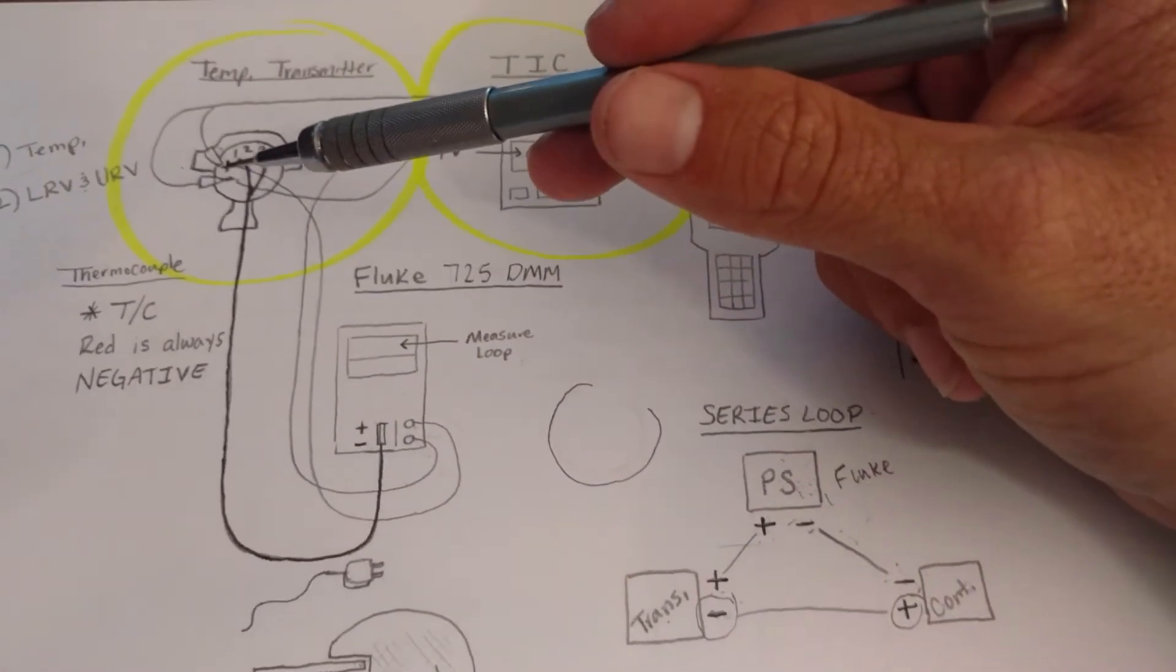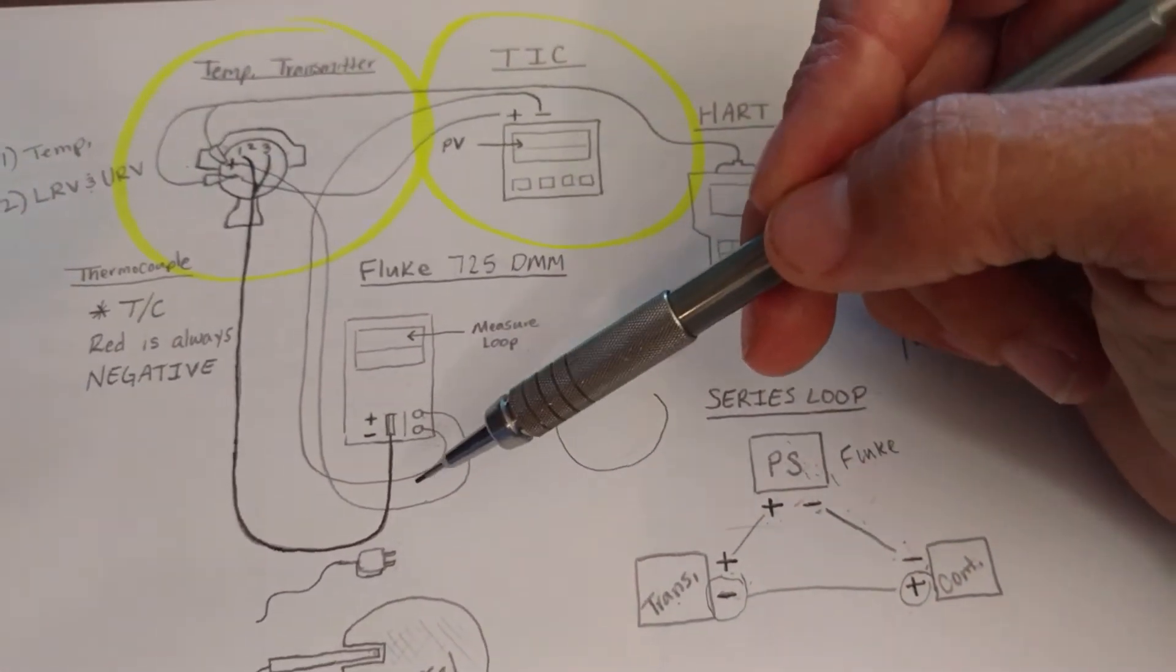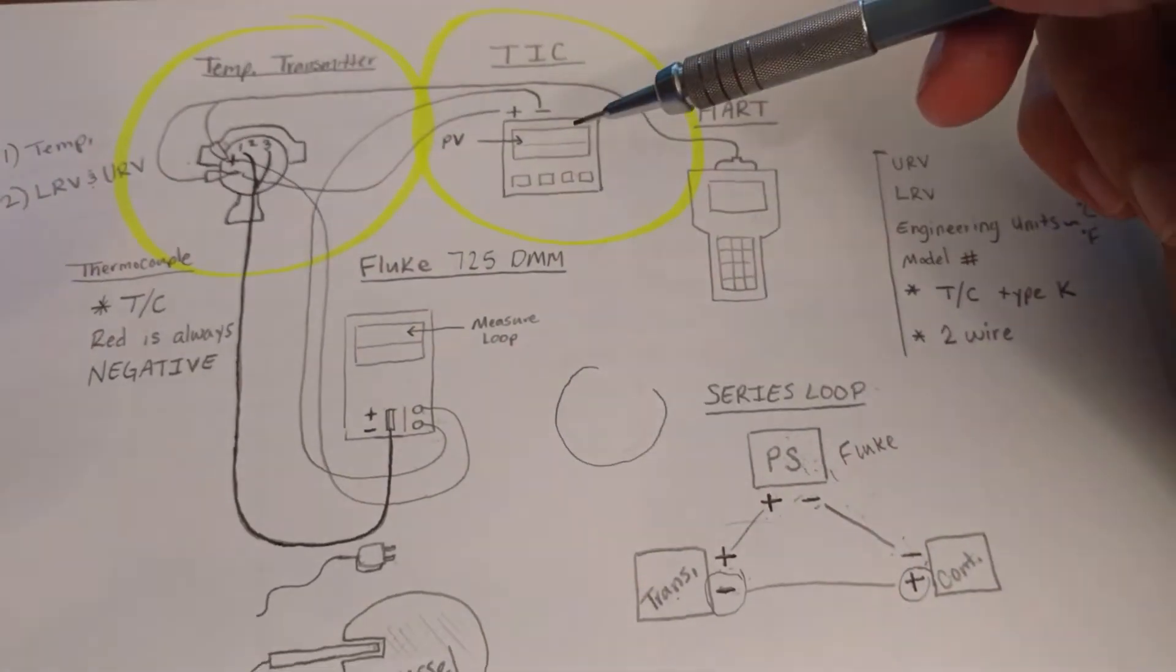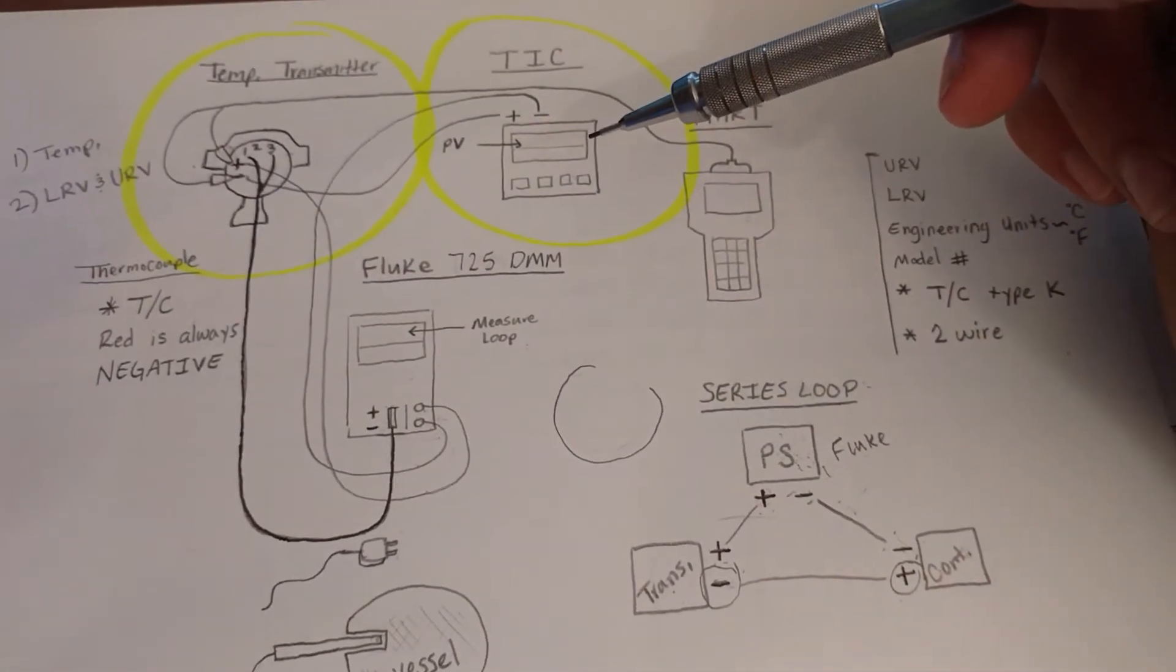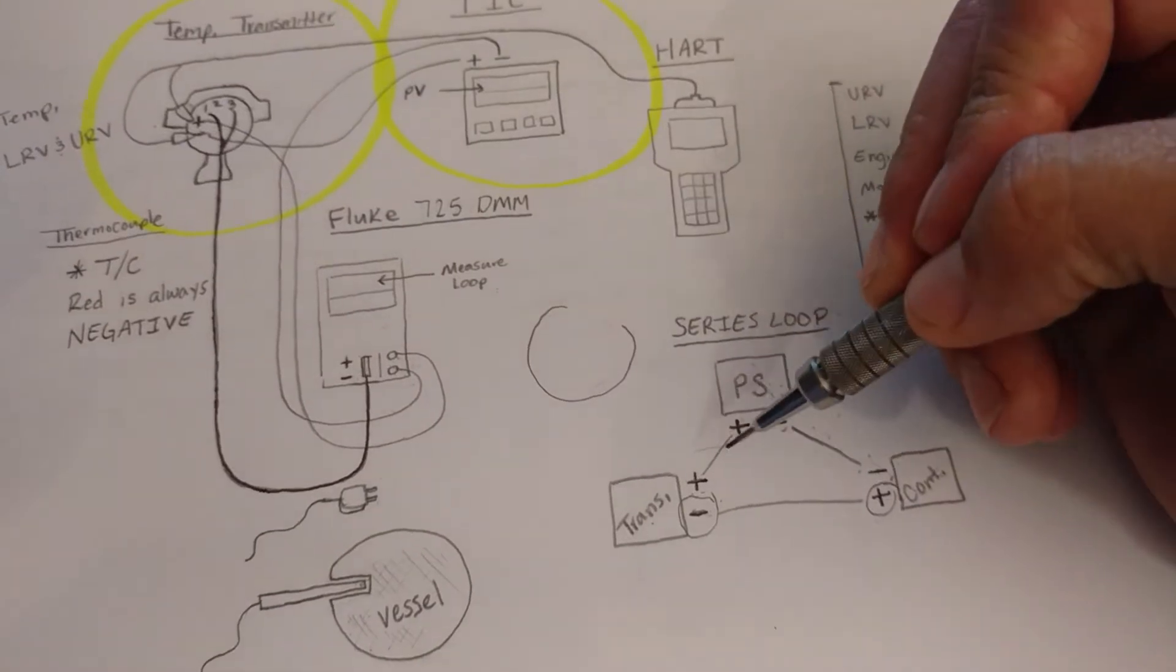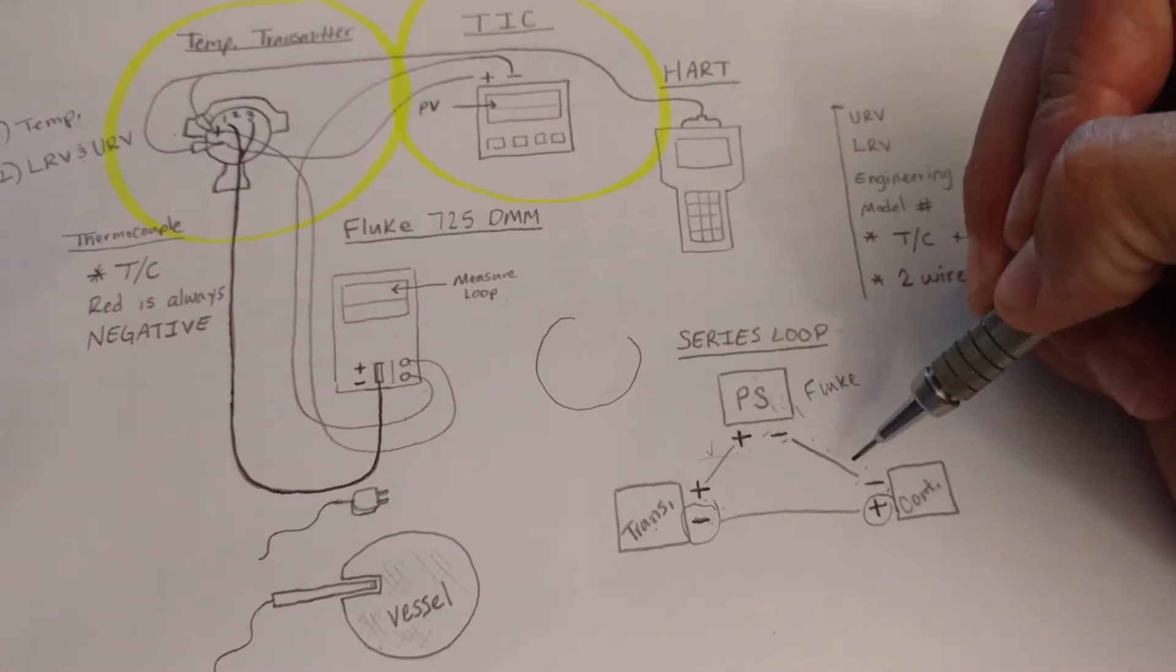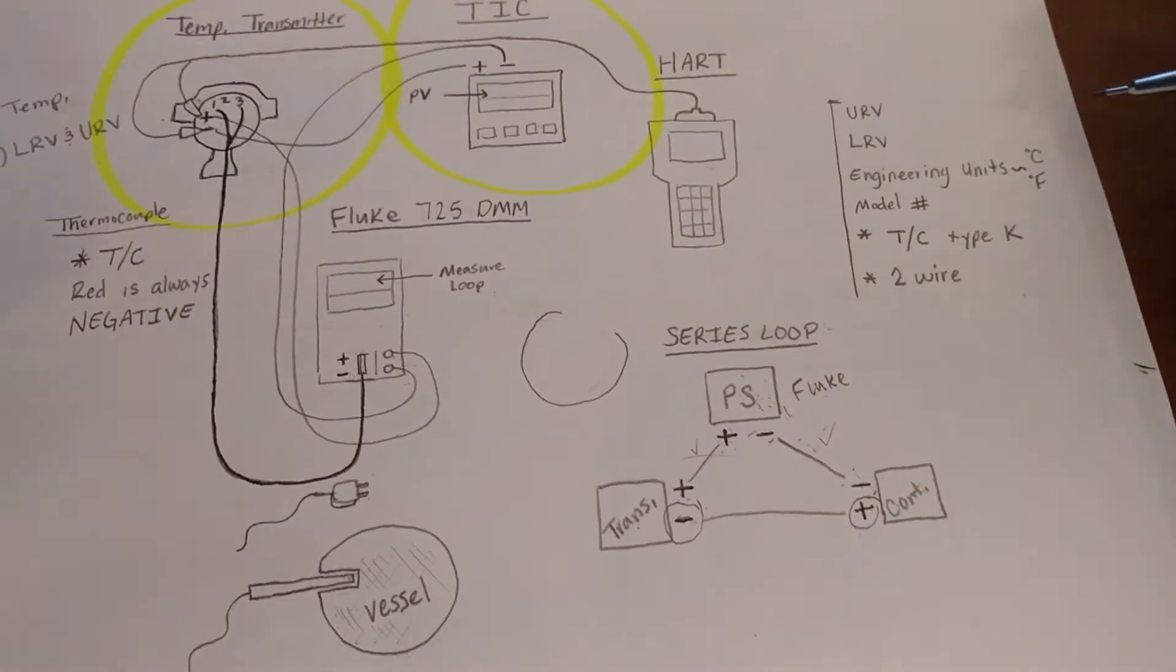Positive to the positive terminal on the transmitter. Negative to the negative terminal on the controller. So positives are done, negatives are done. Check and check.